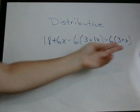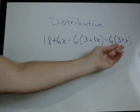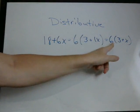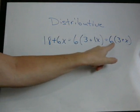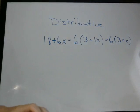So we went from there to there. And remember to go from here to here, we just multiplied through. 6 times 3 is 18 plus 6 times x is 6x.